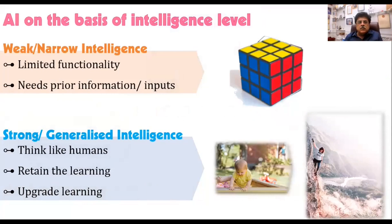One is narrow intelligence, also known as weak intelligence, and the other is generalized or strong intelligence. Weak intelligence is focused on limited functionality — for example, your electronic watch checking your fitness data and advising how much exercise you should do. It performs a particular task, so that is limited functionality, and such intelligence needs a lot of inputs and guidance. It is not true intelligence. Strong or generalized intelligence refers to machines under development which are able to think like humans, exhibit human-like intelligence, sense stimuli, make decisions, and decide a course of action in the future.